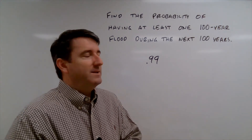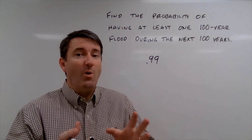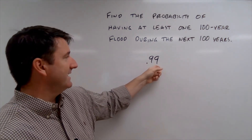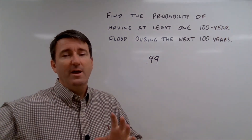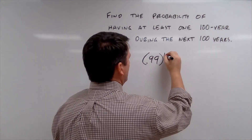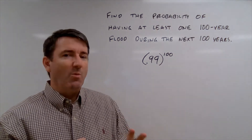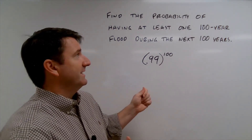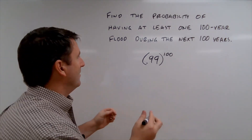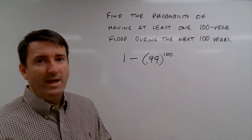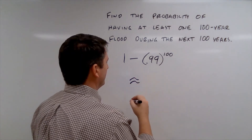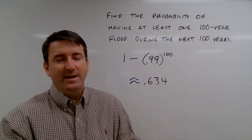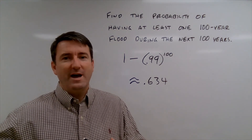Now we need to figure out the probability that a 100-year flood won't occur any time in the next 100 years. These are independent events, so we take 0.99 and multiply it by itself 100 times — that's 0.99 to the 100th power. That gives us the probability that a 100-year flood will not occur in the next 100 years. To find the probability it does occur at least once, we subtract from one, and plugging that into our calculator gives a probability of approximately 0.634. So there's about a 63% chance that a 100-year flood will occur sometime in the next 100 years.